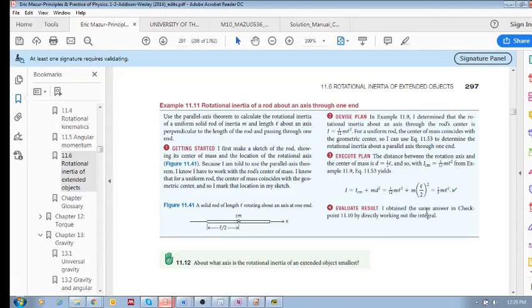So I obtained the same answer in checkpoint 11.10 by directly working out the integral. So it's very nice if you've got a table, if this object is found in Table 11.3, all you need to do is go and read it off the table. Then you get this first term, and then you need to calculate MD². So you add M, which is the total mass, and then you calculate this distance between these two axes anywhere on this rod, and you square that distance, and you add it, and you're going to get the rotational inertia about whatever point you have chosen.